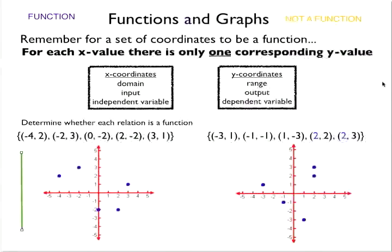Now we're going to take a look at a list of points — a list of coordinates — and see whether or not that list represents a function. Remember, the definition of a function is that for the set of coordinates to be a function, each x value can only have one corresponding y value. The x values are what we put in — these are our input, our domain, or our independent variables. The y coordinates are the output, most commonly called the range, or the dependent variable.